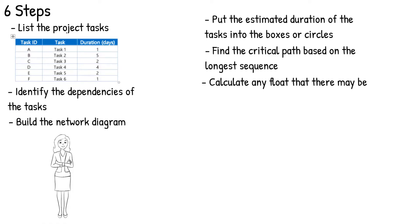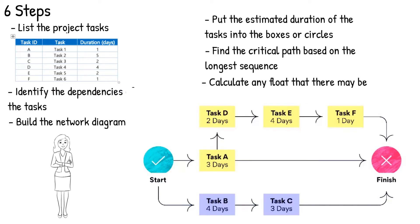Calculate any float there may be. Float refers to the amount of flexibility of a specific task — it indicates the amount of time a task can be delayed without impact on subsequent tasks or the project end date. It's important to remember that tasks on the critical path will have zero float. Based on our example, the network diagram would look something like this. The critical path is shown by the activities in yellow, and the activities in purple are activities that have float and are therefore non-critical activities.